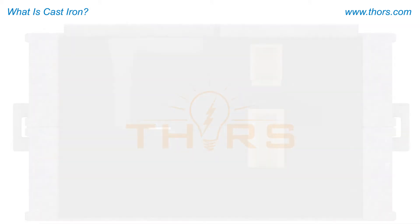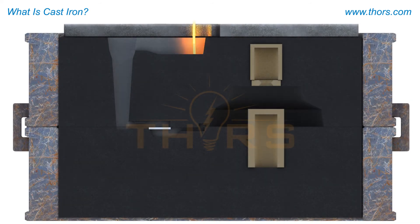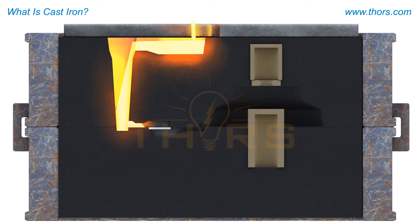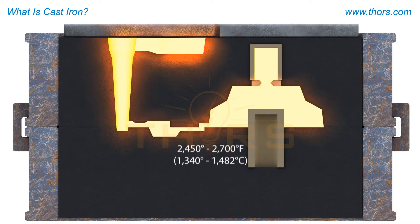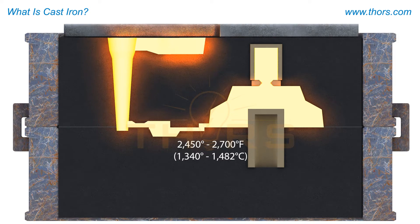The production of cast iron involves pouring molten metal into molds of a specific size, shape, and design. The pouring temperatures typically range from 2450 to 2700 degrees Fahrenheit, depending on the grade of iron or alloy and the size and design of the casting.